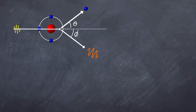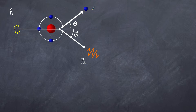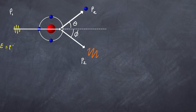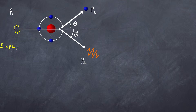The momentum of the incoming photon we'll call P1, and the outgoing photon momentum will be P2. The electron also has momentum, but we'll differentiate it by calling it PE. We know that the energy of any photon is simply equal to its momentum times the speed of light — Pc — coming out of the relation E squared equals P squared C squared plus MC squared, all squared.